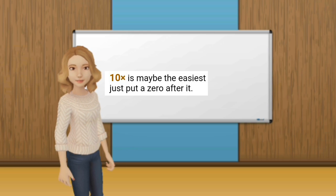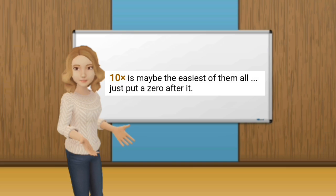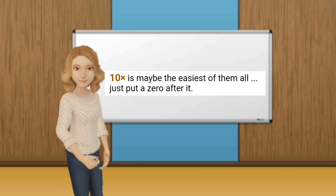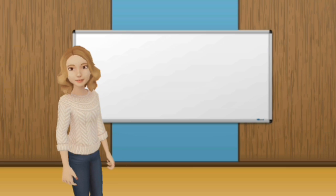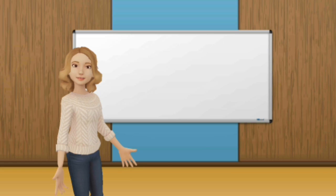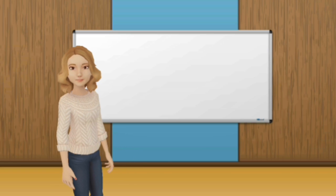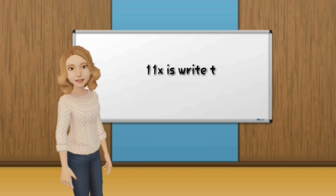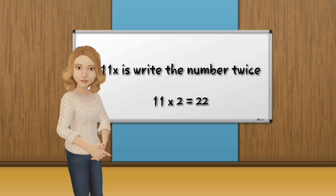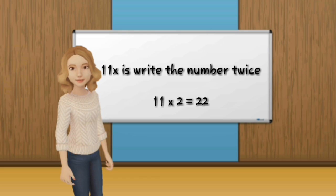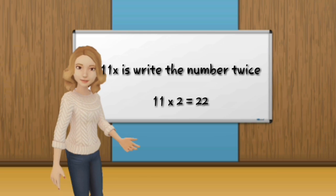The 10 times table is maybe the easiest of them all — just put a 0 after the number. For the 11 times table, you write the number twice; for example, 11 times 2 is 22.